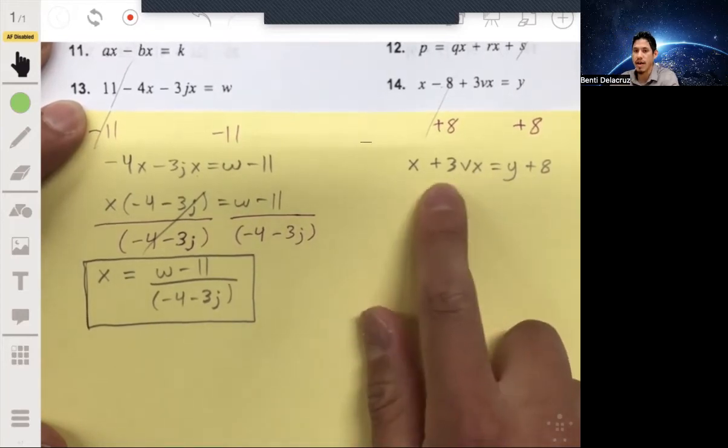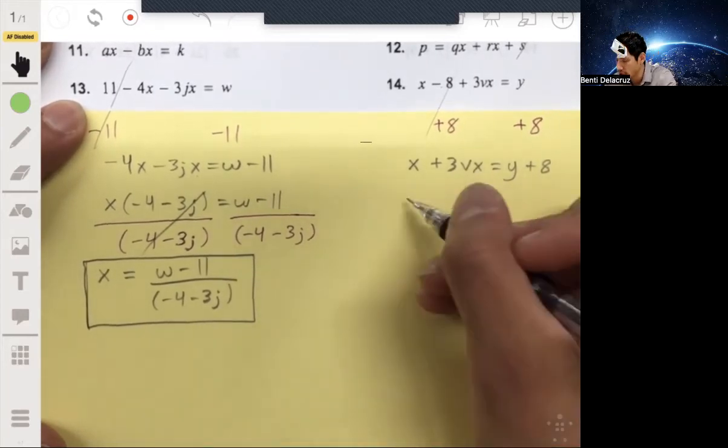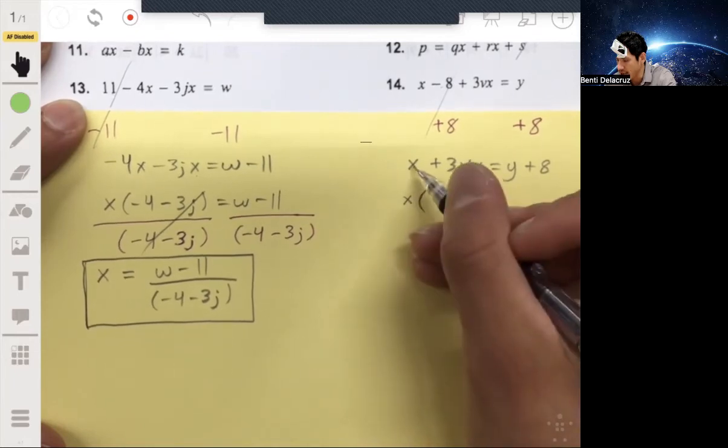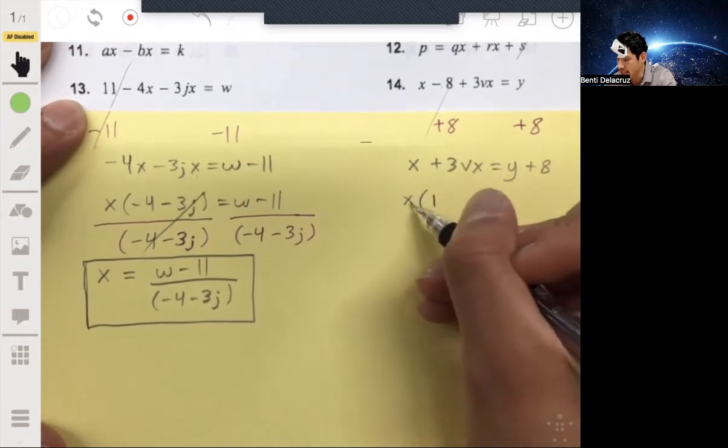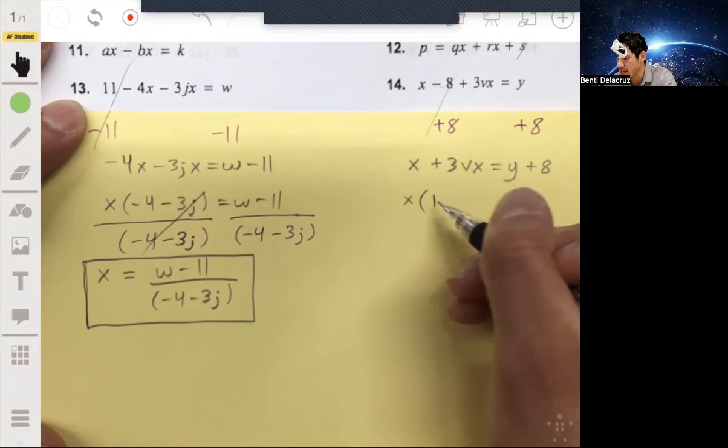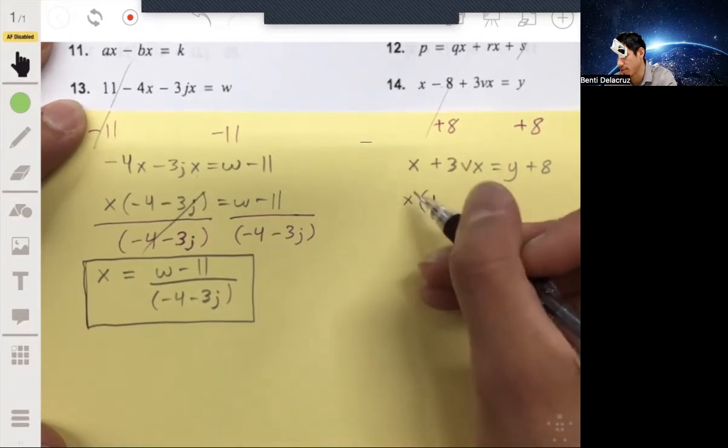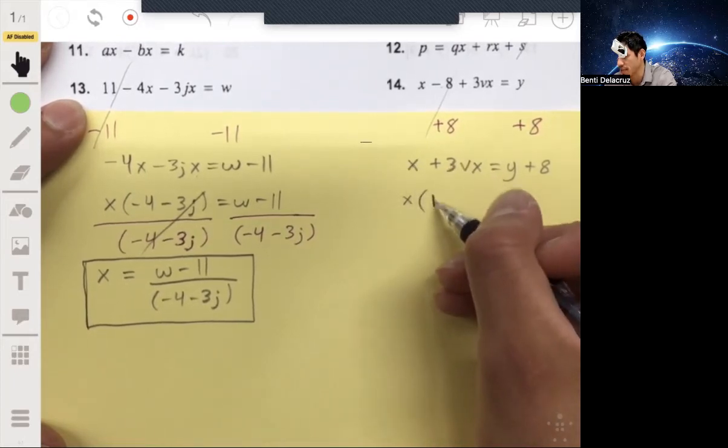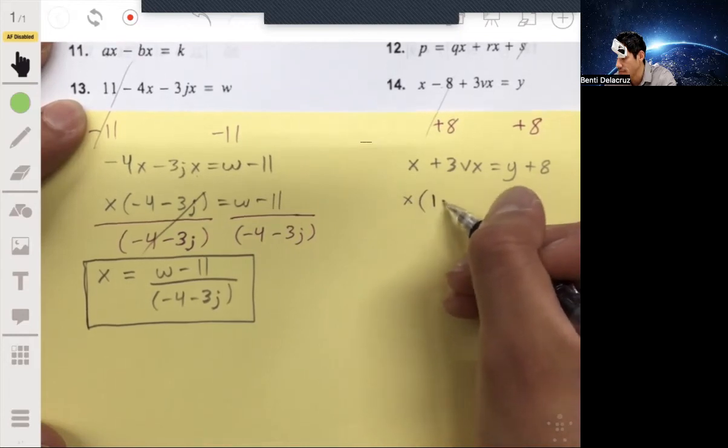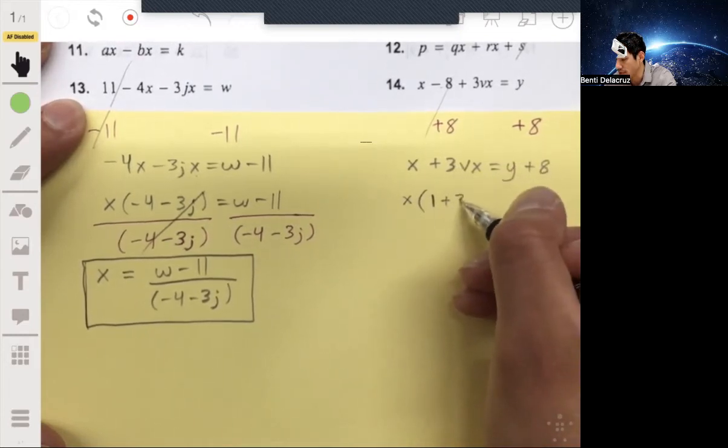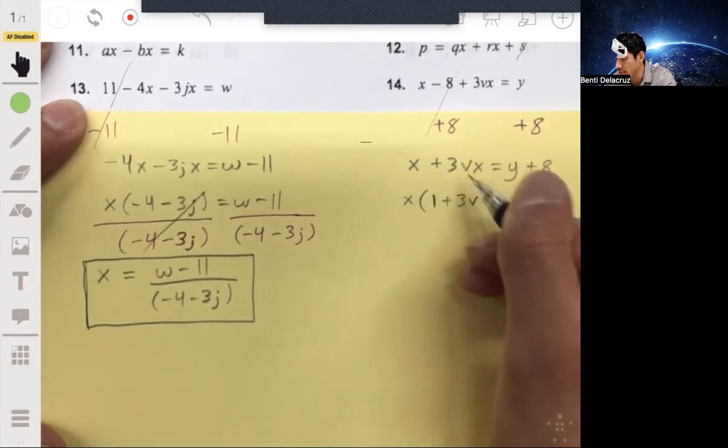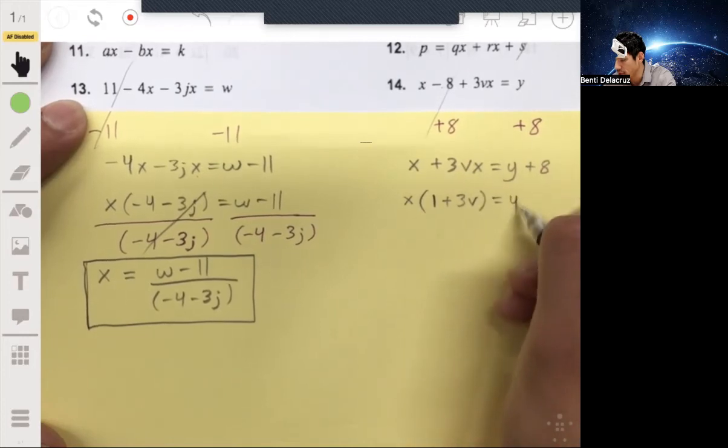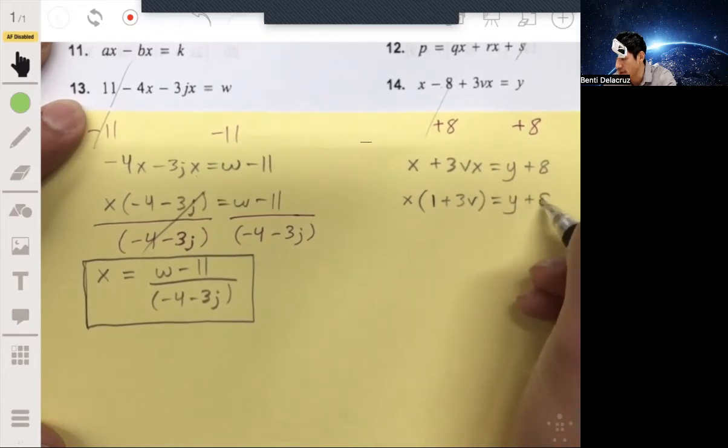Now we can factor out an X from those two terms. So you'll get X. And here you'll get a 1 because X times 1 will be X. Any number times 1 just gives you that or any term or anything times 1 just gives you whatever that thing is. So here we're going to have plus 3V because X times 3V equals 3VX equal to Y plus 8.